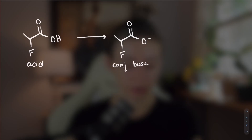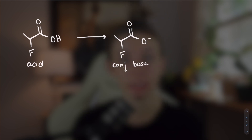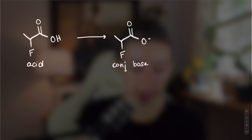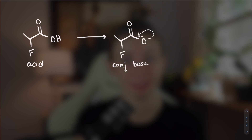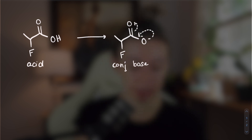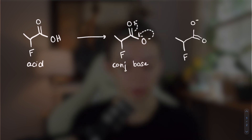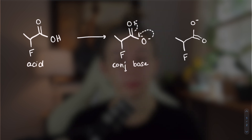So let's use the same example we were using before. Here on the right, we have our conjugate base with our negative charge sitting on it. That negative charge wants to move around. And you can move these around — so you can make the negative charge pop onto that bond that's going towards the oxygen, then push these up and give the negative charge to that other oxygen. Then you end up with this.